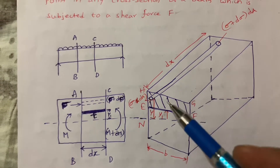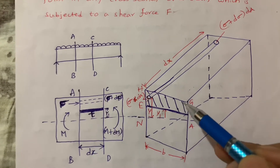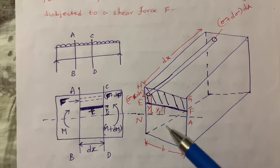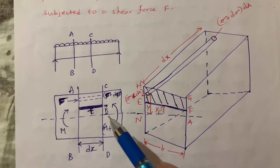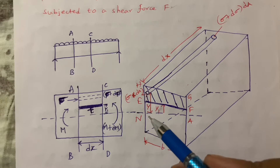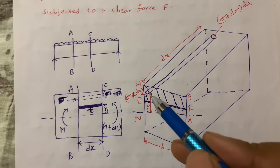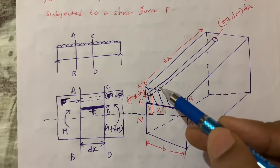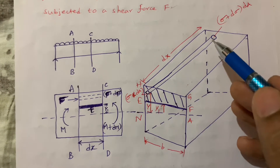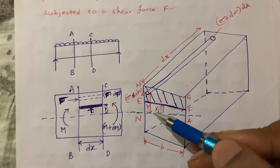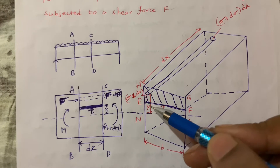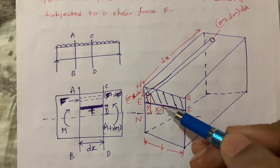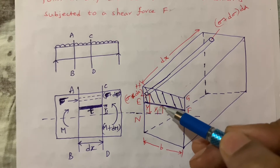I am drawing the same section here. After cutting the beam, it looks like this. This is the neutral axis — this dotted line. From this neutral axis, I am considering one strip element, an elemental cylindrical shape. From this neutral axis to this cylinder, the distance is Y, and from the neutral axis to this section, the distance is Y1.